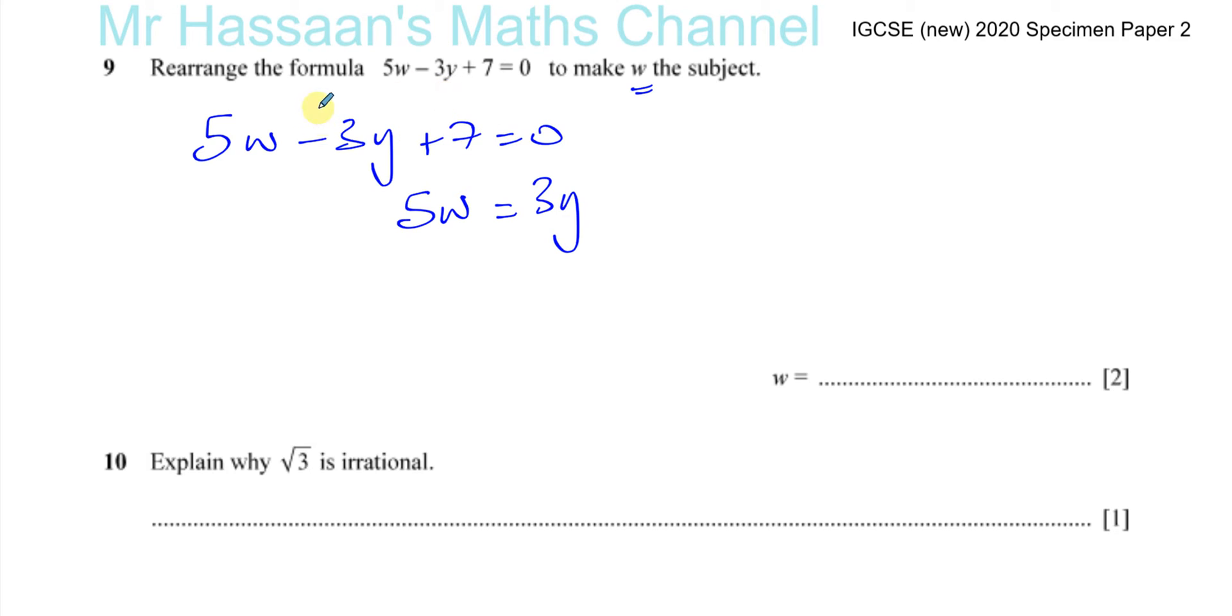And I'll also take away 7 from both sides to get rid of this plus 7, so it'll end up as a minus 7 on that side.